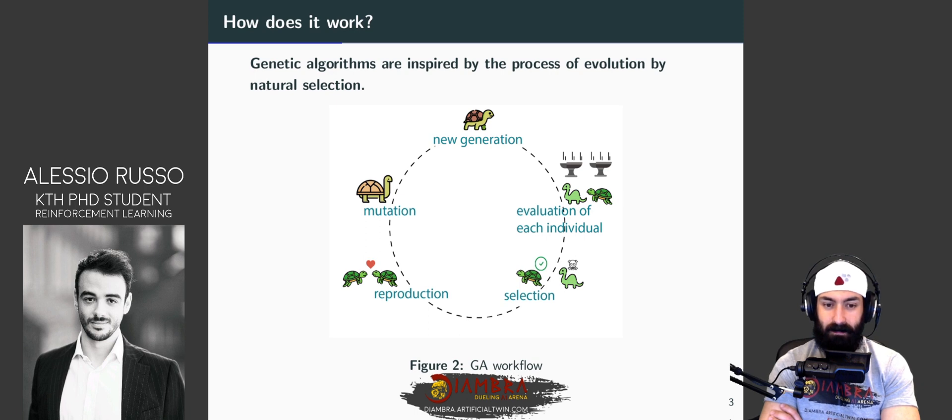The idea is that we start with a population of candidates. In our case, we have a lot of neural networks. So we have like 100 neural networks, and this is our population.